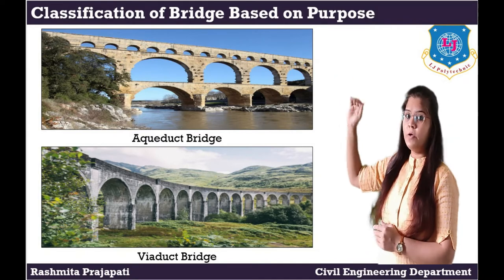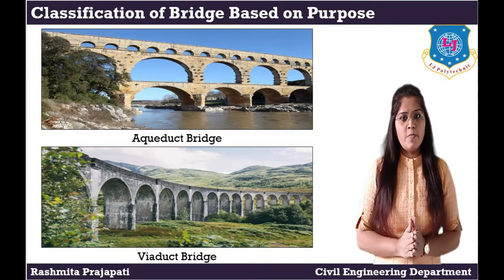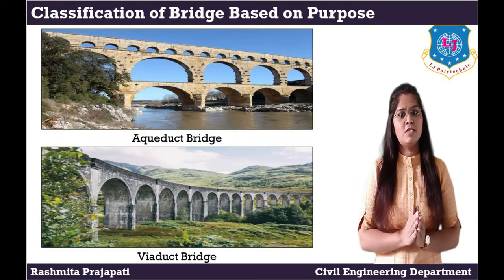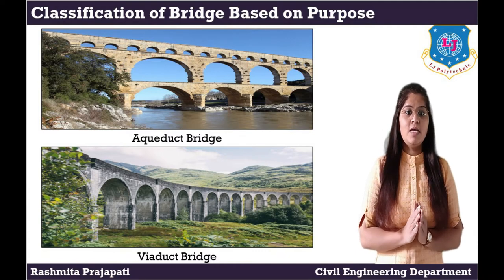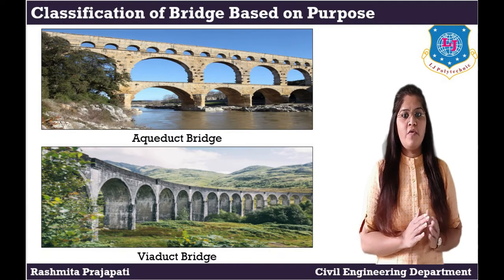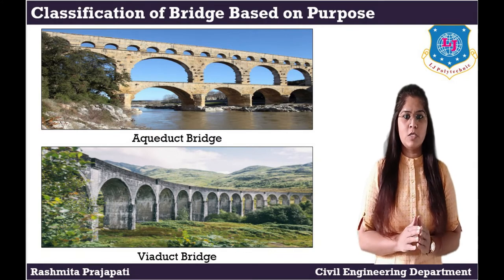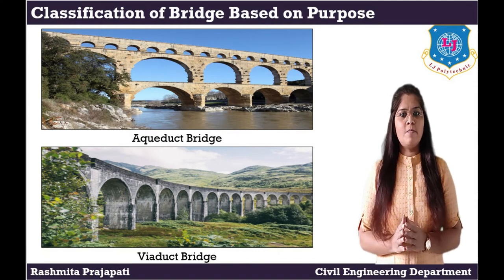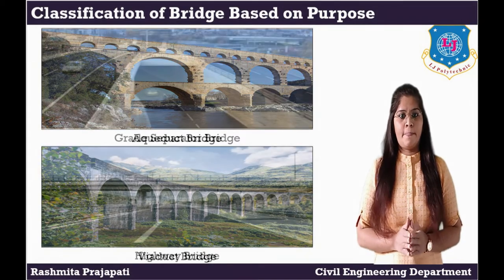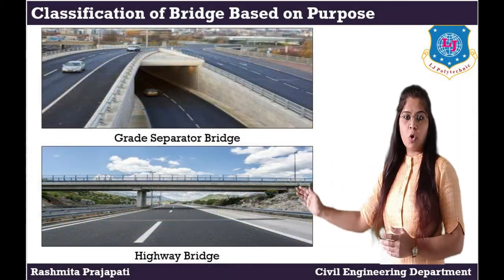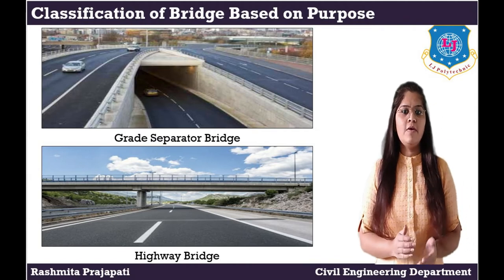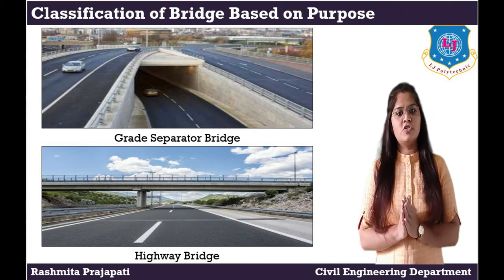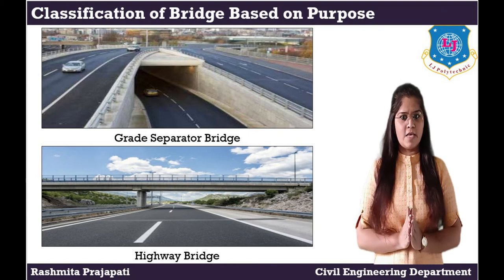Classification of bridge based on purpose. Culvert: it is a small bridge constructed over a stream which remains dry for most part of the year. Viaduct: it is a long continuous structure which carries a road or train over a dry valley, composed of a series of spans over piers driven into the ground instead of solid piers. Grade separator: when two roads cross each other, or a road and rail line cross each other and there is a considerable difference in formation level, a bridge structure is constructed which is known as a grade separator.